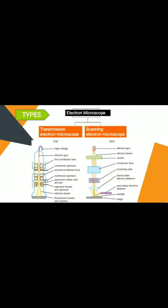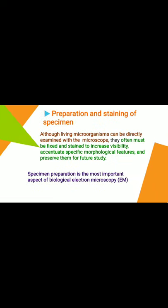The electron microscope is categorized into transmission electron microscope (TEM) and scanning electron microscope (SEM). TEM was designed by Knoll and Ruska in 1932; a finely focused beam of electrons from an electron gun passes through a specially prepared ultra-thin section of the specimen, and resolution depends on the wavelength of the electron beam. The scanning electron microscope is used to study three-dimensional images of the surface of cells, tissue, or particles.